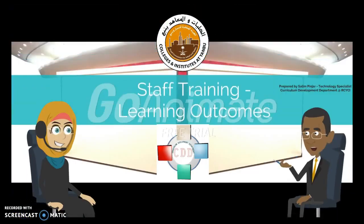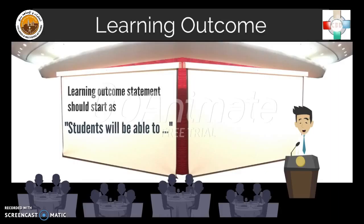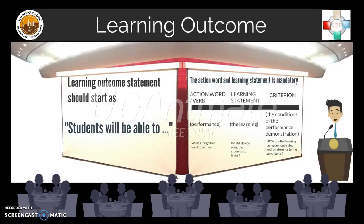Today's topic is about learning outcome statements. Learning outcome statements should start with 'Students will be able to.' The action verb and learning statement are mandatory components. However, the criterion is optional.